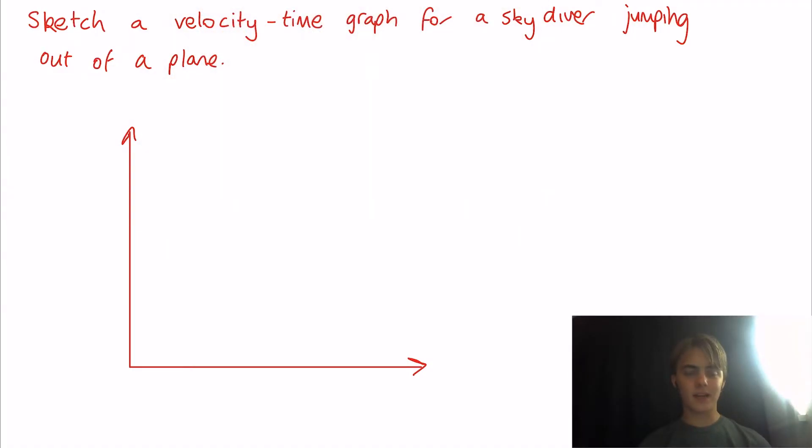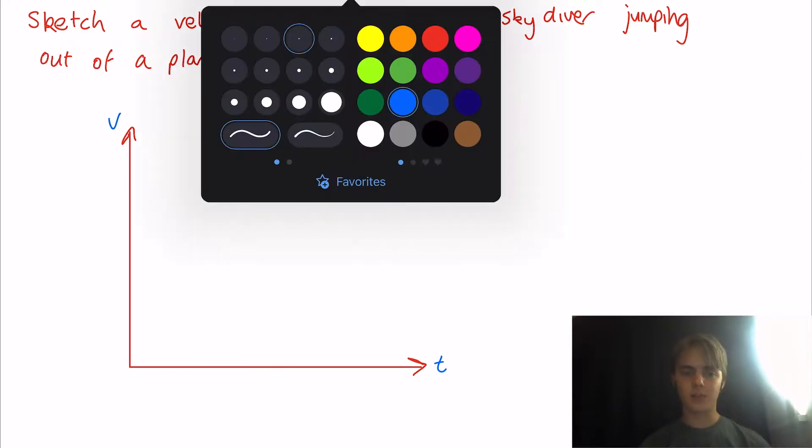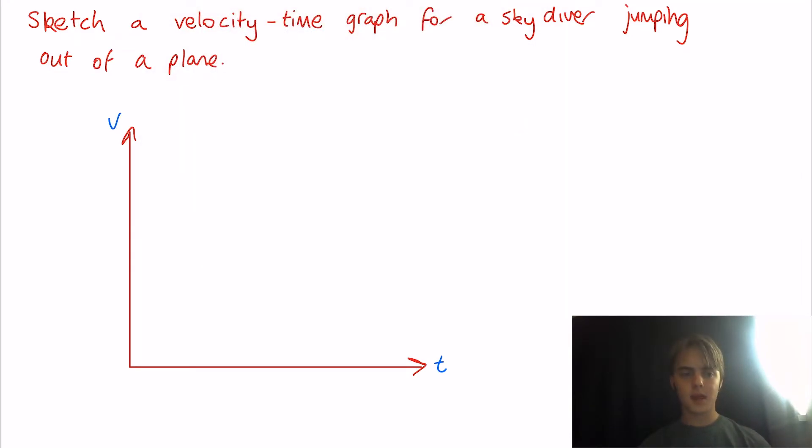So here we have a velocity time graph and we need to sketch it for a skydiver jumping out of a plane. So the first thing we're going to do is label our axes. And then we need to think in our heads what the phases of this would be. So as you're falling, you're going to accelerate, hit terminal velocity, decelerate when you open your parachute, have a new terminal velocity and then hit the ground. I'll explain these a little bit slower, but you have the first, fourth phase and then the final phase.